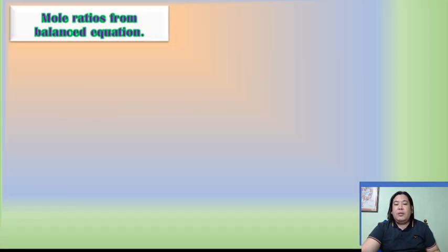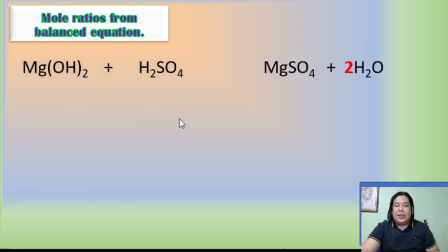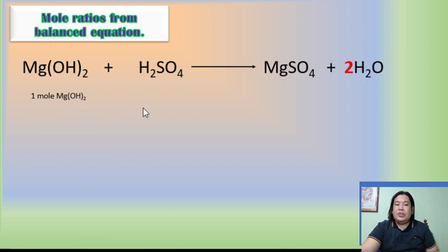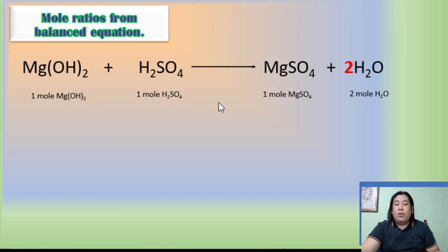In solving stoichiometric problems, you have to construct mole ratios from a balanced equation first. So I have here a complete balanced chemical equation. You will interpret this as: one mole of magnesium hydroxide reacts with one mole of sulfuric acid to produce one mole of magnesium sulfate and two moles of water.